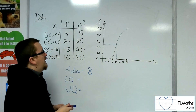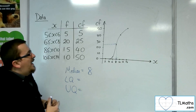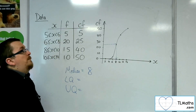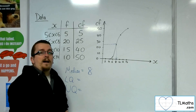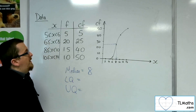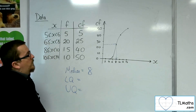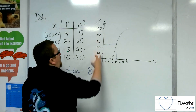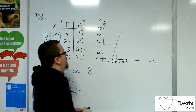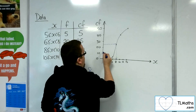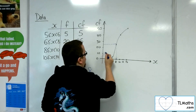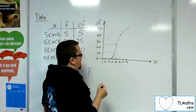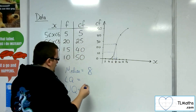For the lower quartile and upper quartile, some people might add 1 and divide by 4, but because it's grouped data with lots of data points, you can just divide through by 4. So 50 divided by 4 is 12.5, which gives something like a value of about 7.